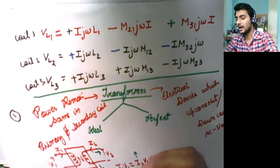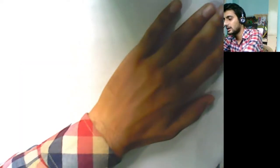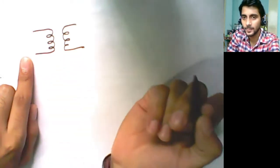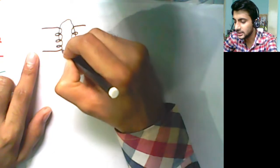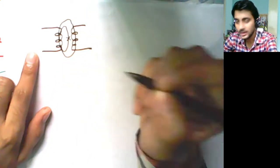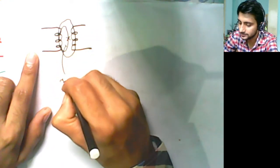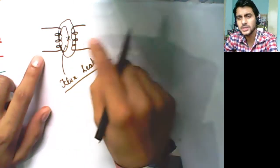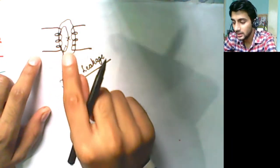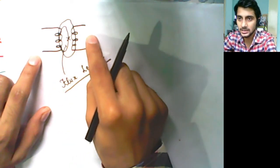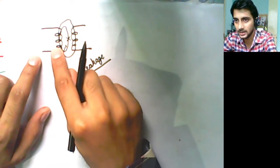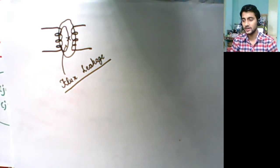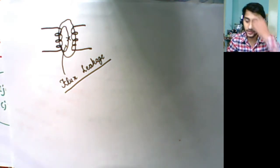Next, we should understand what is an ideal transformer. If two coils are placed in the vicinity of each other, the flux of one may or may not link with the other. If it does not link, we call this flux leakage, and it is not ideal coupling. Ideal coupling would mean that the flux of one coil entirely passes through the other — no flux leakage — and we call that a perfect transformer.